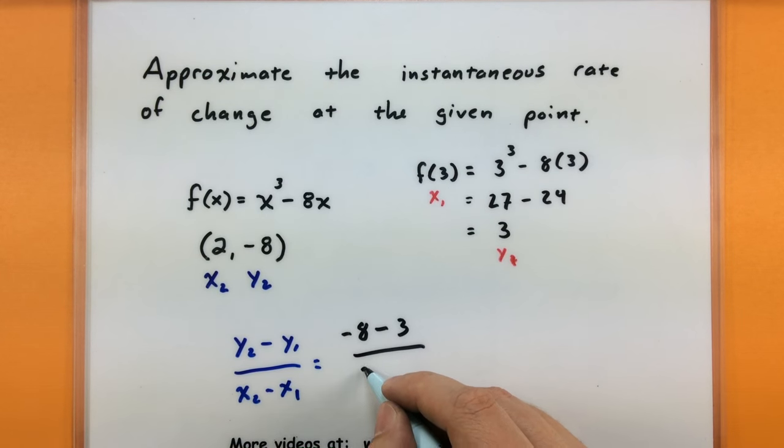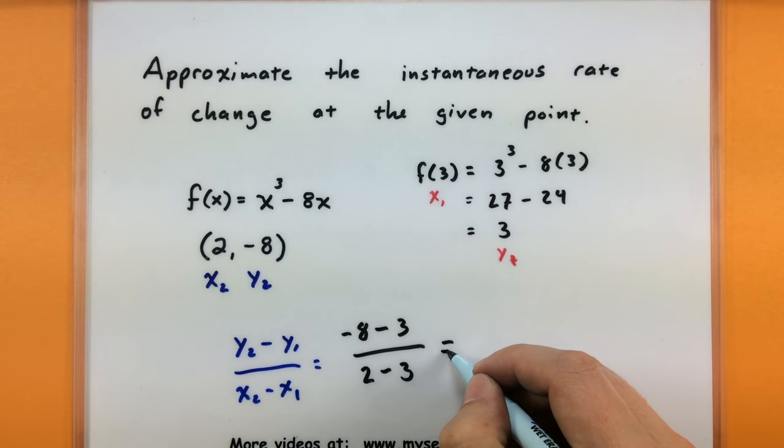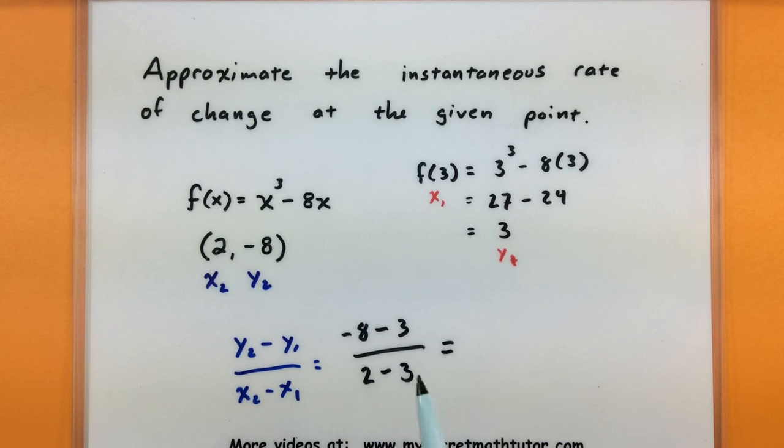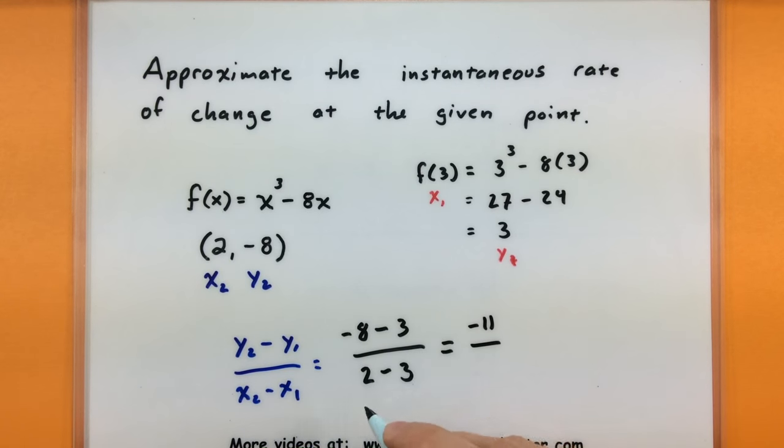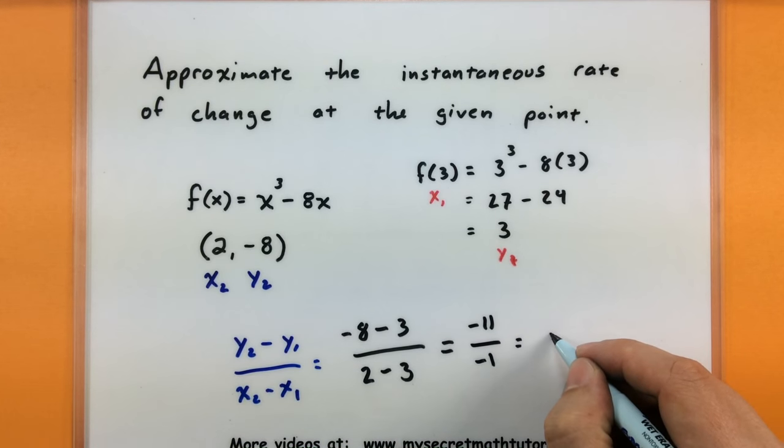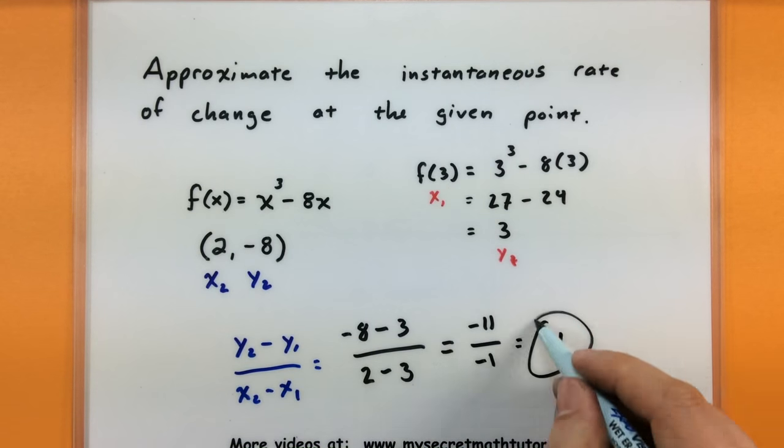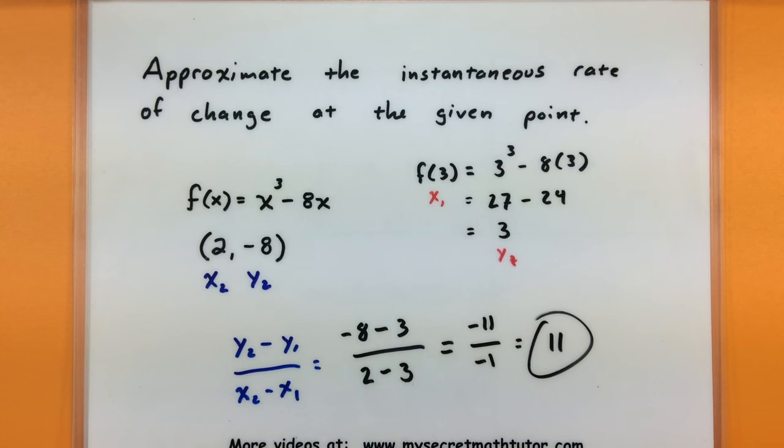Perfect. Alright. So negative 8 minus 3 would be a negative 11. 2 minus 3 is a negative 1. So this reduces to 11. So when I have this point and I have a point at 3, so I'm choosing those two specific points, the slope between them is 11.